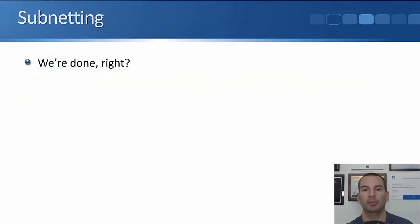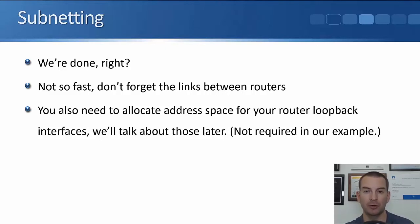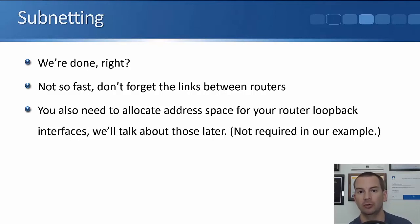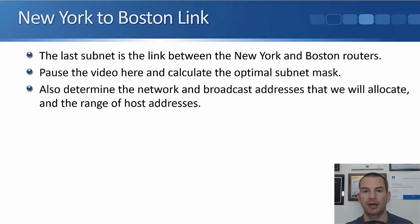That was our four departments, so we're done — right? No, remember we have to allocate addresses for the point-to-point link between the routers in Boston and New York. In the real world you'd also allocate address space for loopback addresses — logical addresses used for management, usually allocated a /32 — but we'll cover those in later lectures. For now, pause the video and determine the optimal subnet mask for the link between the New York and Boston routers, plus its network, broadcast, and host addresses.